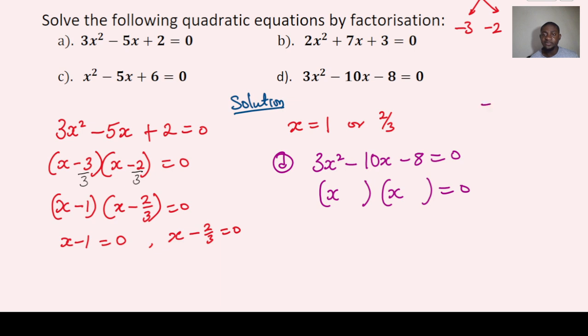That gives you negative 24. So what are the factors of negative 24 that, when added together, will give you negative 10? And that is basically minus 12 and plus 2.